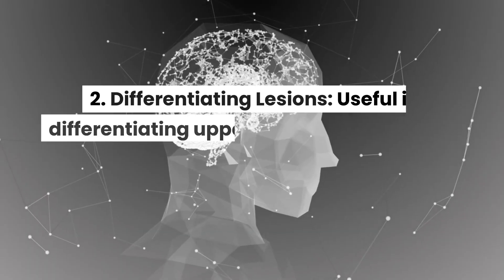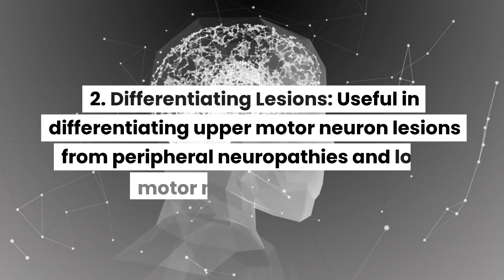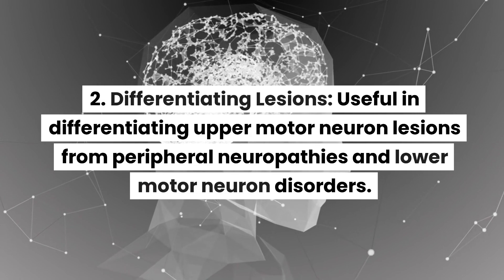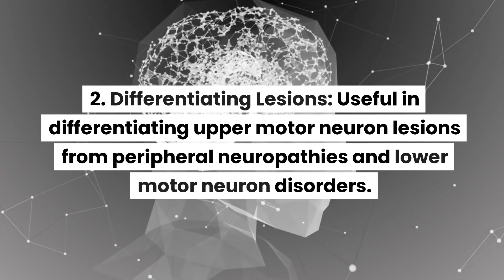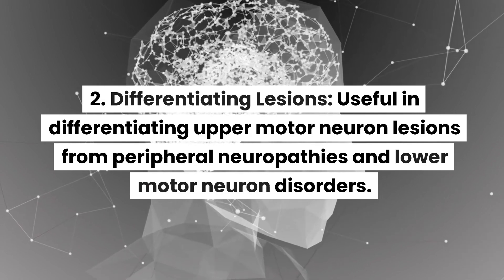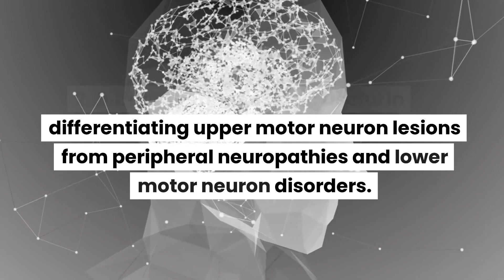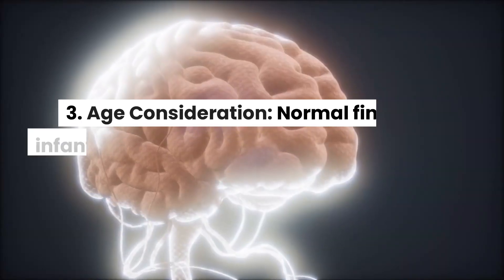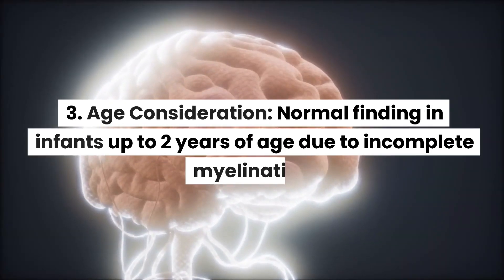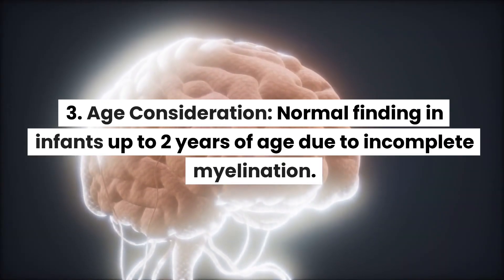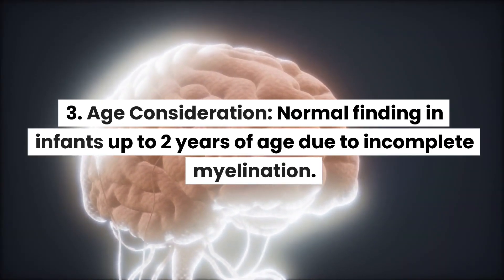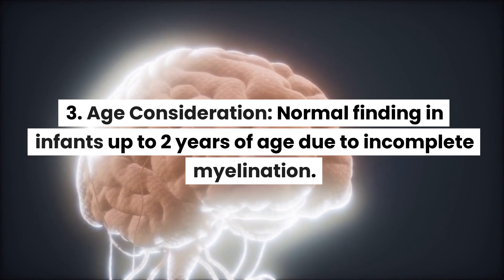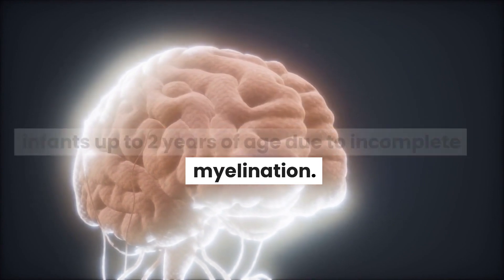Differentiating Lesions: Babinski's sign is useful in differentiating upper motor neuron lesions from peripheral neuropathies and lower motor neuron disorders. Age Consideration: It is a normal finding in infants up to 2 years of age due to incomplete myelination.